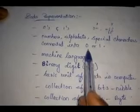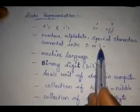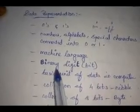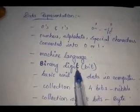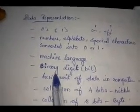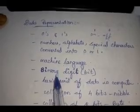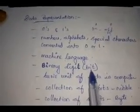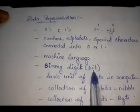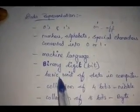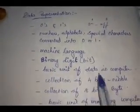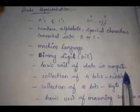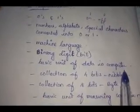This 0 or 1 is called a binary digit. The short form of binary digit is bit. This bit is the basic unit of data in a computer.